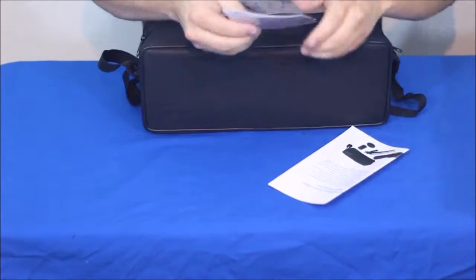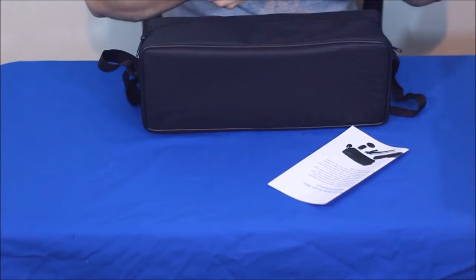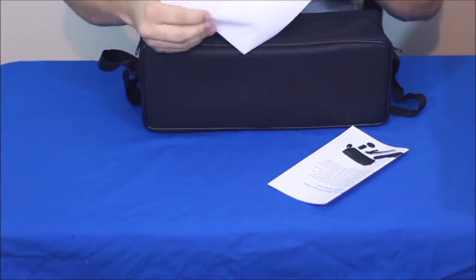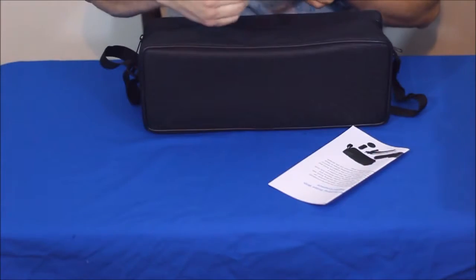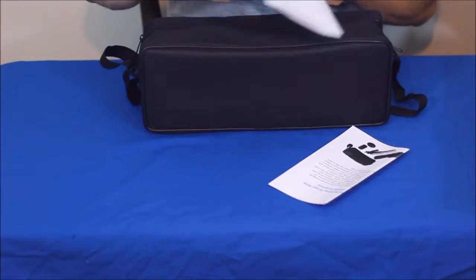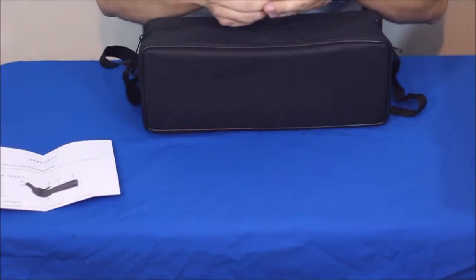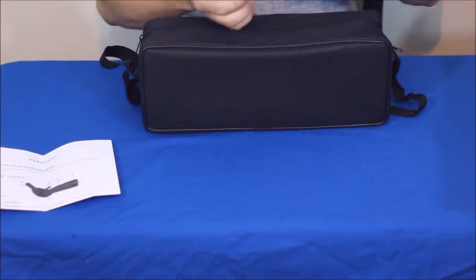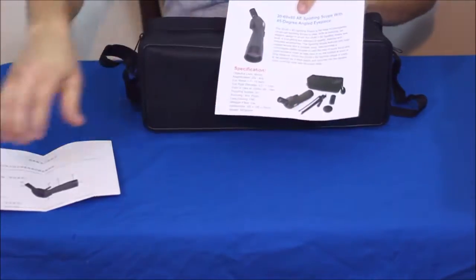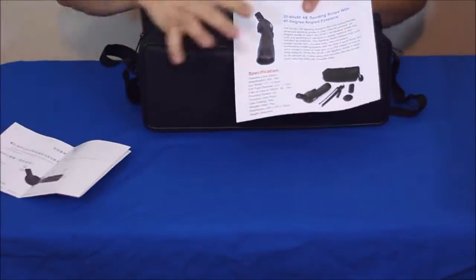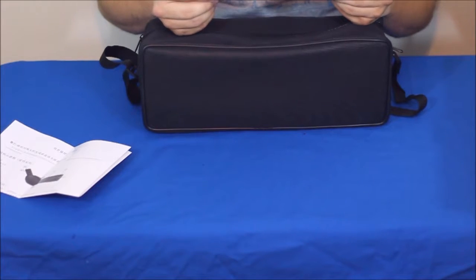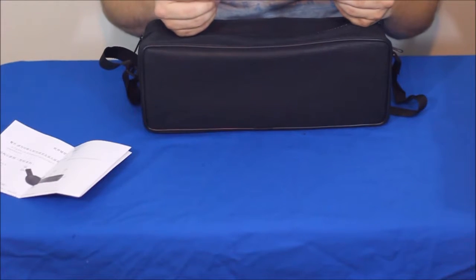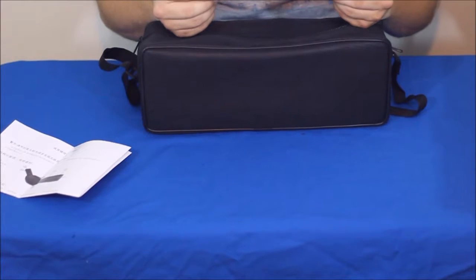We've got some instructions here and the instructions are in I believe Chinese, so unfortunately this is not something that we're going to be able to do much with. But we do have this here and this gives us everything in English. It says a 20 to 60 by 60 AE spotting scope with a 45 degree angled eyepiece.